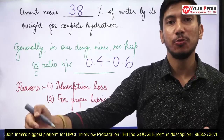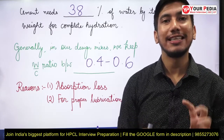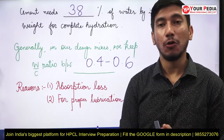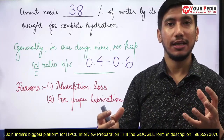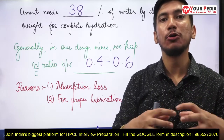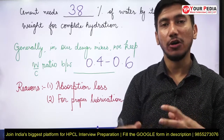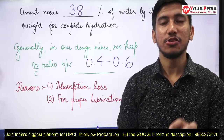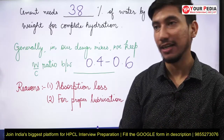Why don't we go beyond 0.6? When the water-cement ratio goes beyond 0.6, there are chances that capillary voids will form, and the products formed by hydration are not able to fill those voids. The concrete then becomes porous and weak, and its structural integrity gets compromised.